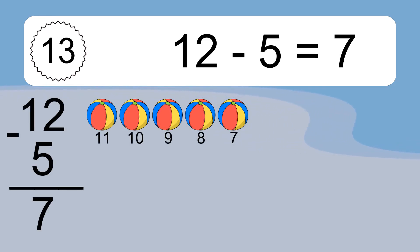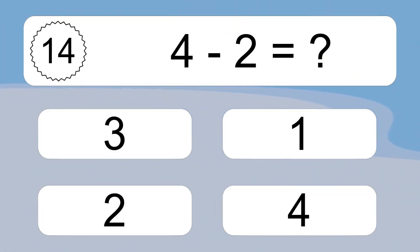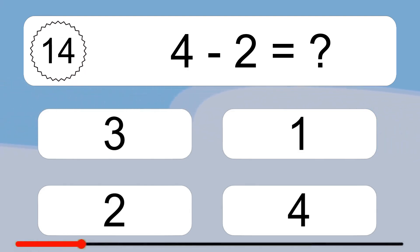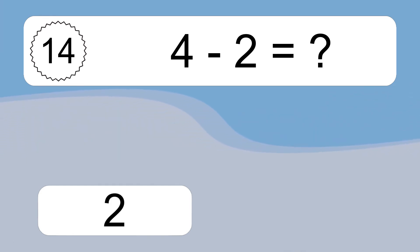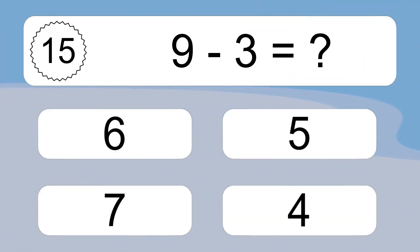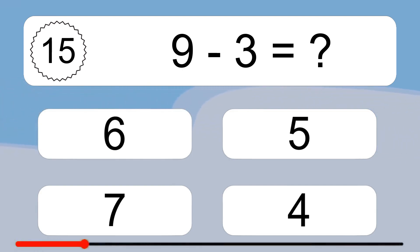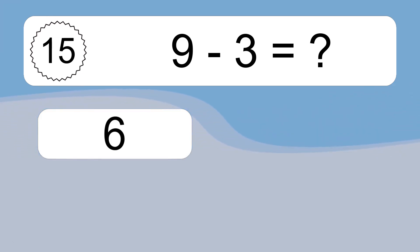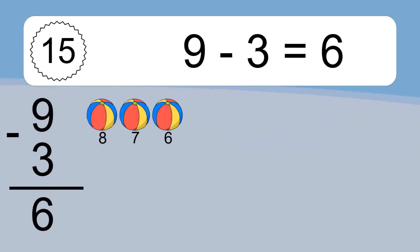6 minus 5 equals 7. Let's count it: 11, 10, 9, 8, 7. 4 minus 2 equals what? 6 minus 2 equals 2. Let's count it: 3, 2. 9 minus 3 equals what? 9 minus 3 equals 6. Let's count it: 8, 7, 6.